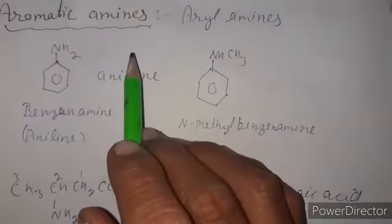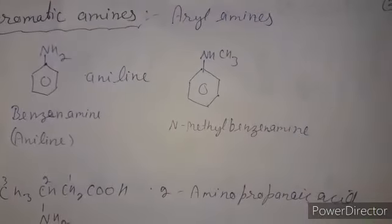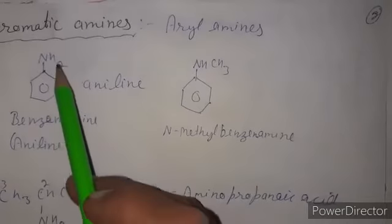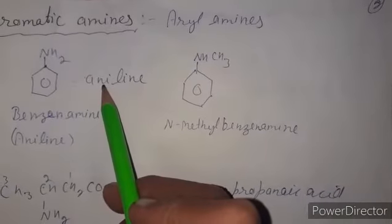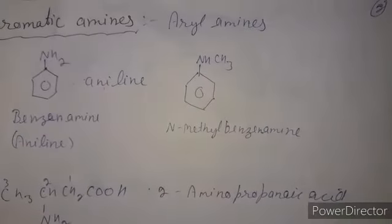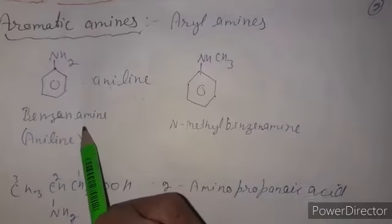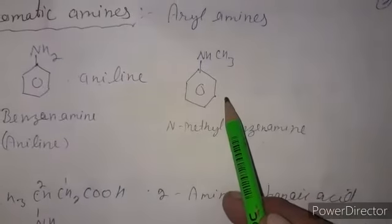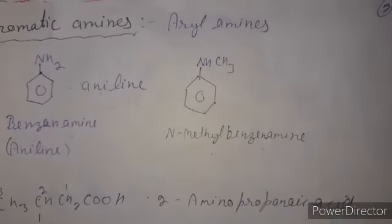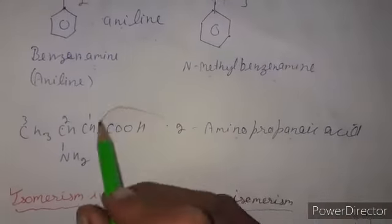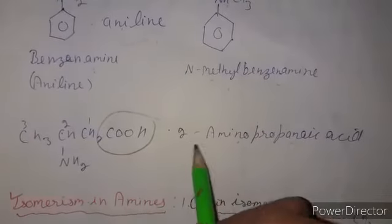For aromatic amines, the suffix '-amine' is added to the name of the aryl group. C₆H₅NH₂ is named aniline, which is accepted by IUPAC; its IUPAC name is benzenamine. For N-substituted compounds, the prefix 'N-' is used, for example N-methylbenzenamine for a secondary amine. When the amino group is a substituent, it is named as a prefix — for example, 2-aminopropanoic acid, where the carboxylic acid is the principal functional group.